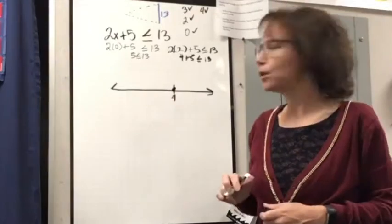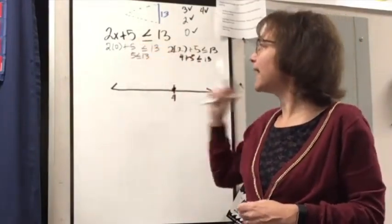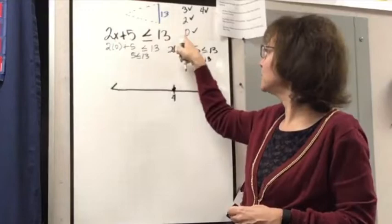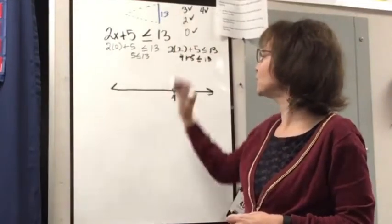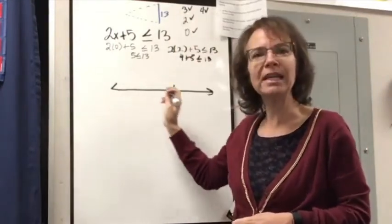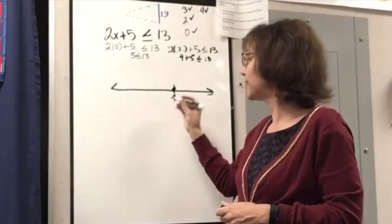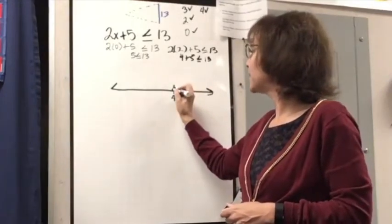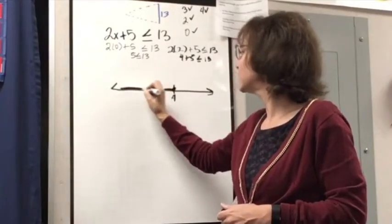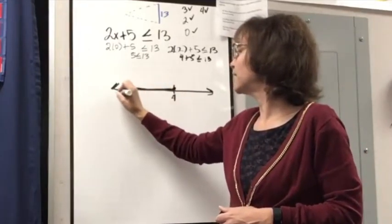And then all of the other numbers for x that make that true, when I substitute these values, I know 0, 2, 3, all these in-between numbers, all these decimals and fractions are also going to make that true. And so I can just graph this way.